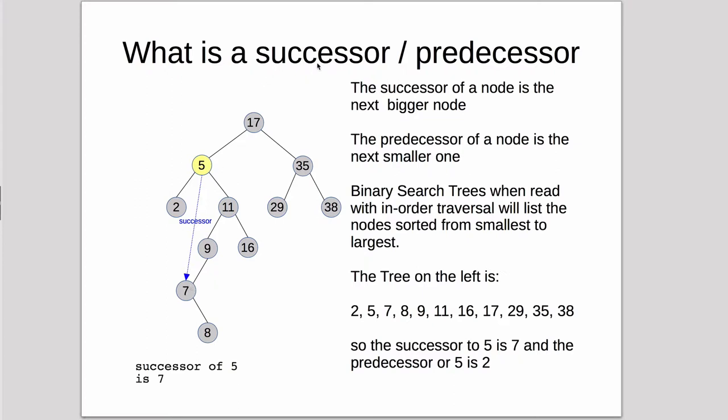Now in general, you can write a general case for finding the successor for any node, and this is more complicated, because look at the successor for 17, it has no parent, so you have to use a different algorithm than what we're just describing. And if you're looking at the node of a leaf, you have to use a different algorithm.